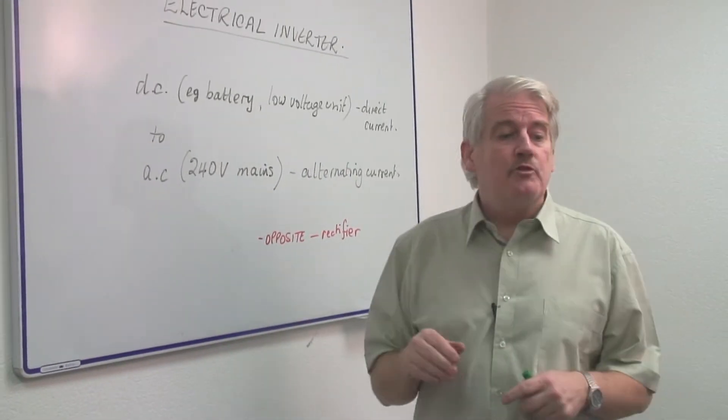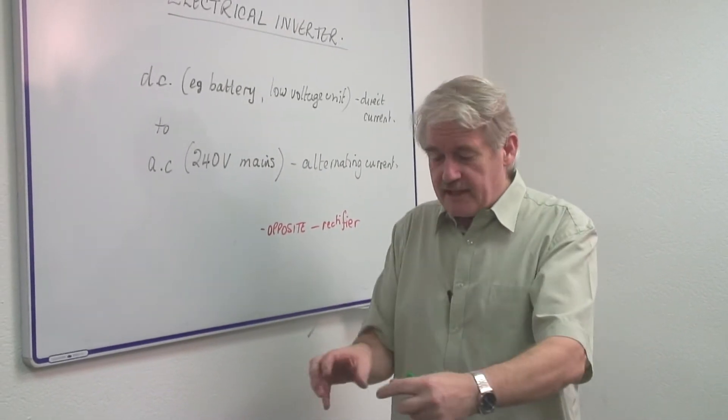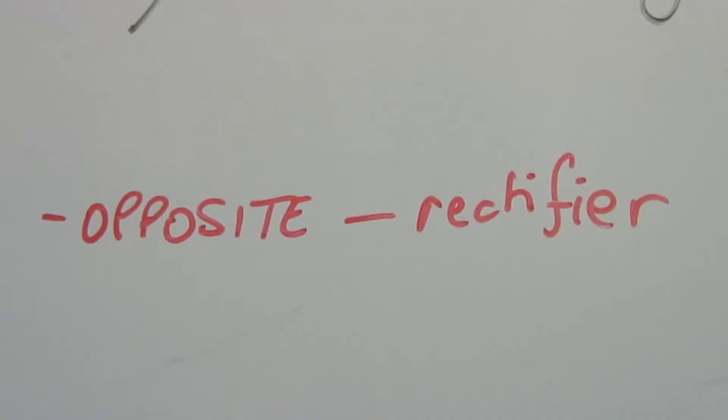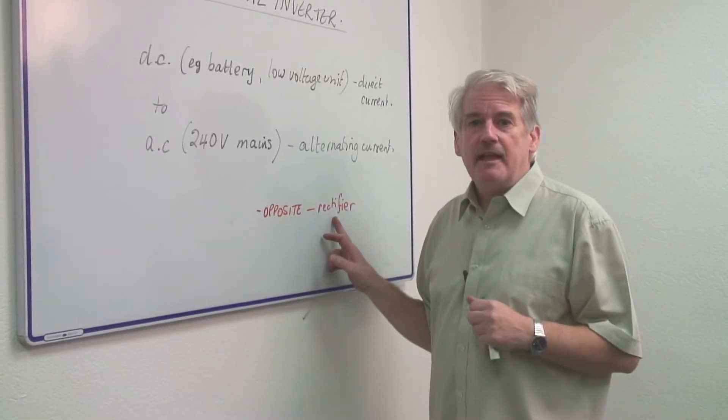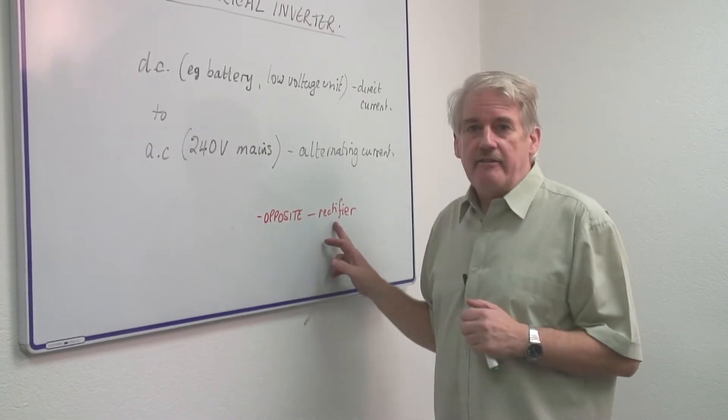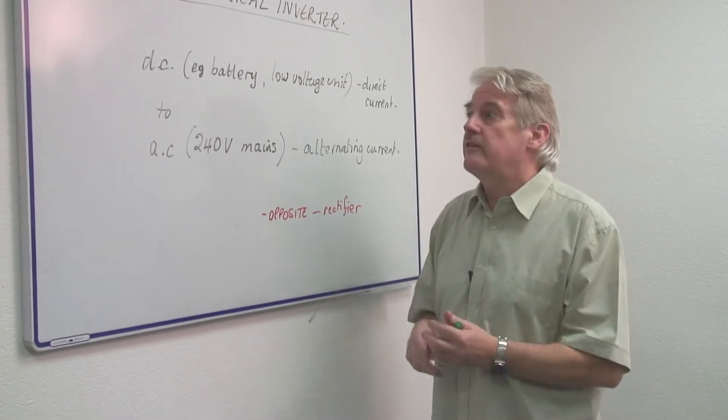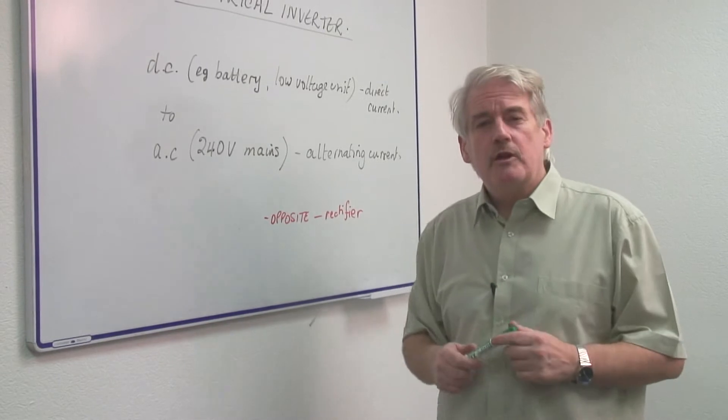So for example, if you plug in your computer, you have a little black box and this rectifies the alternating current from the mains and makes it into direct current like battery current. But what happens when you want to do the opposite?